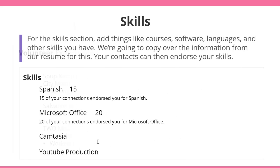For the Skills section, add things like courses, software, languages, and other skills you have. We're going to copy over the information from our resume: Spanish — fluent; Adobe Photoshop — proficient; Camtasia — strong user; YouTube Video Editing — strong; Microsoft Office — proficient. Now that we have added these, as you start connecting with your network, they can endorse you for these skills. This helps make your profile more relevant, especially for the skills mentioned.